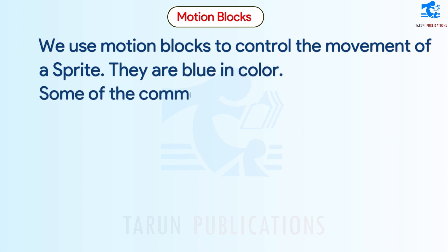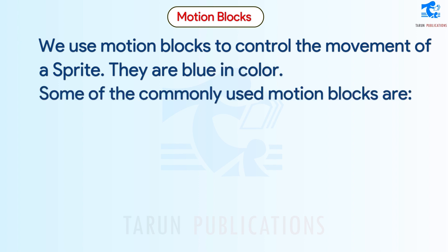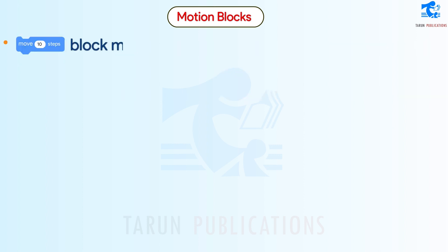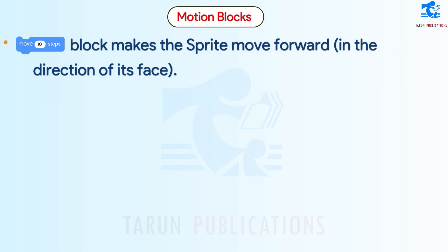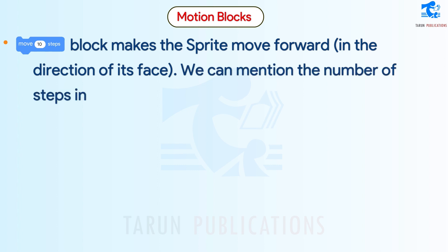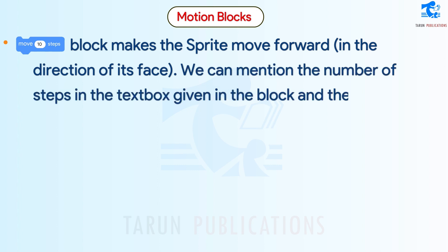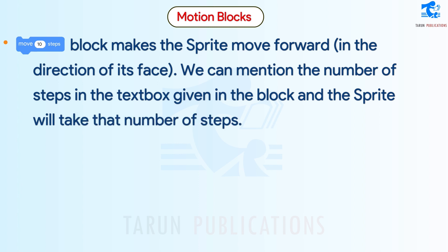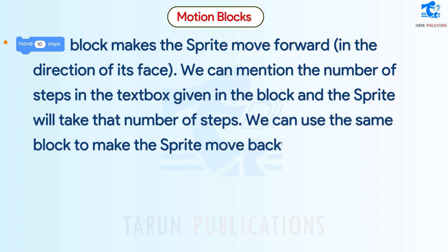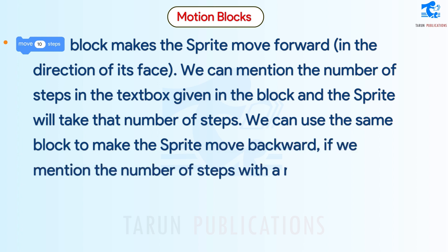Some of the commonly used motion blocks: one block makes the sprite move forward in the direction it is facing. We can mention the number of steps in the text box and the sprite will take that number of steps. We can also use the same block to make the sprite move backward by mentioning the number of steps with a minus sign.